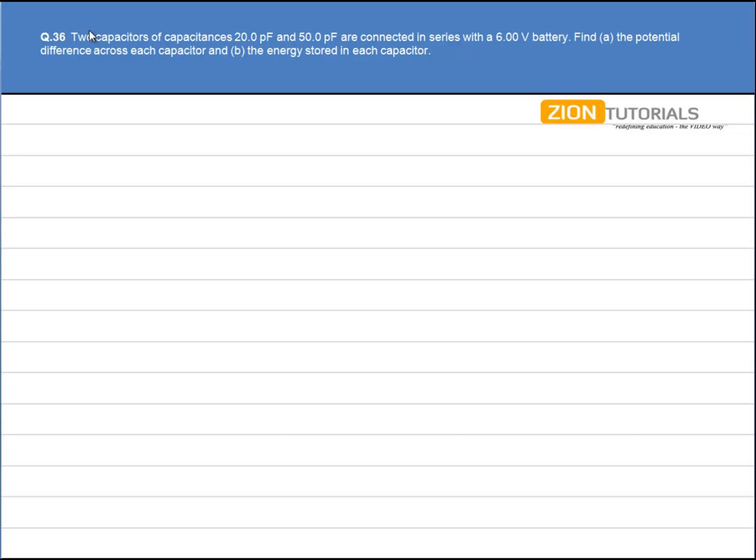Two capacitors of capacitance 20pF and 50pF are connected in series with a 6V battery. C1 is 20pF and C2 is 50pF, connected in series with a battery of 6V. We have to calculate the potential difference across each capacitor.